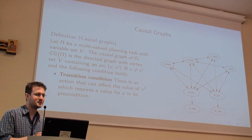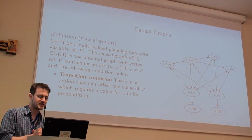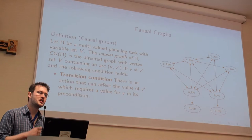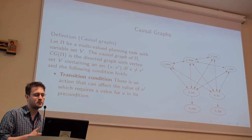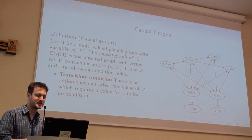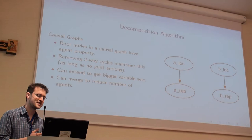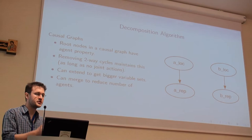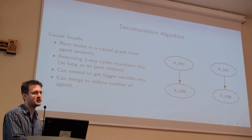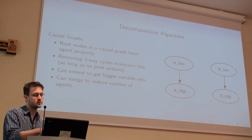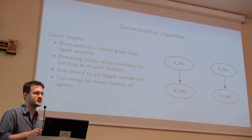Here is the causal graph for the problem I've given. One nice result we can get quickly is that if the causal graph has root nodes, those root nodes have the agent variable property — they can become part of an agent variable decomposition. But even in this very simple domain, there are no root nodes in this causal graph. A next result is that if you remove two-way cycles from the graph caused by the same action, then the root nodes of the reduced graph also have this property, as long as it induces no joint actions in the domain. We do this and get to the graph on the right, taking variable v5 — representing A's location — as one agent and B's location as the other.